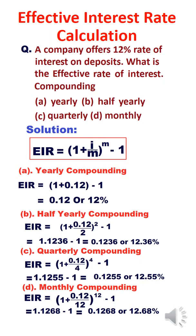Effective interest rate calculation. At the rate of 12% compounded yearly, half yearly, quarterly and monthly — what is the effective interest rate?